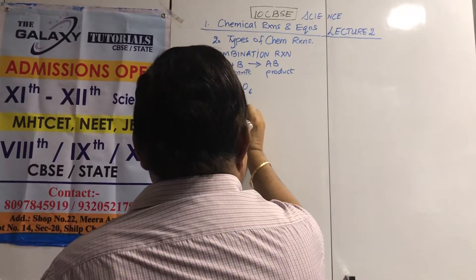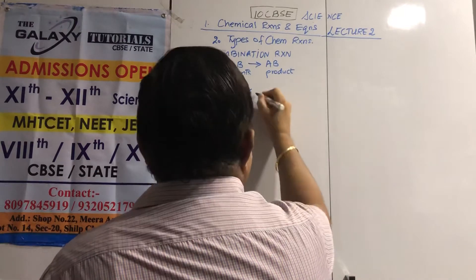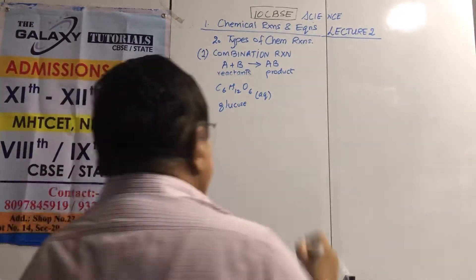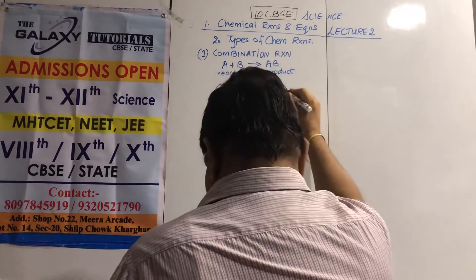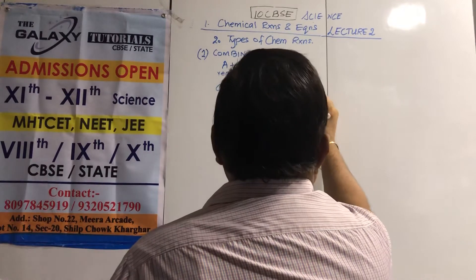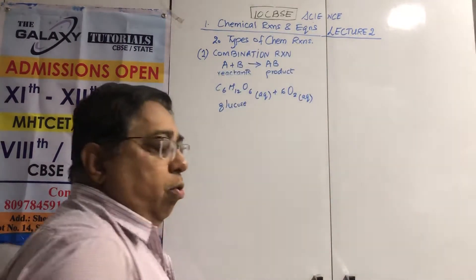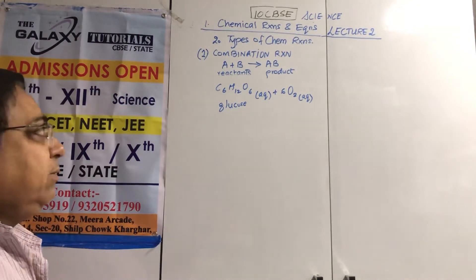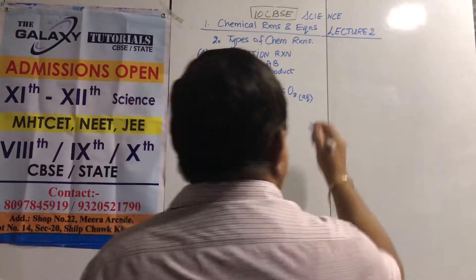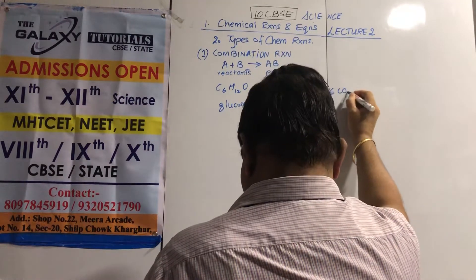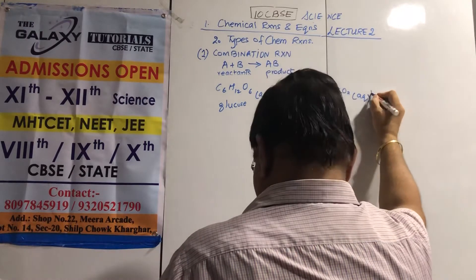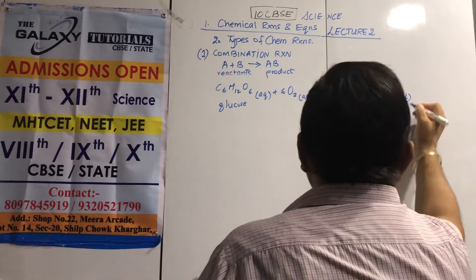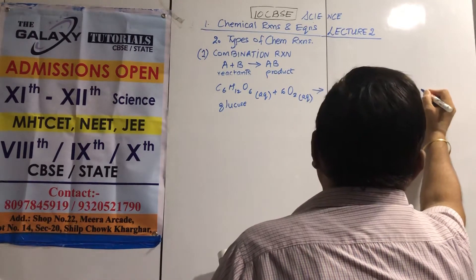Glucose must be dissolved — dry powders don't react; it is in the cytoplasm. The 6O2 is aqueous, as oxygen reaches the cell dissolved via blood through capillaries. This gives you 6CO2 aqueous, still dissolved in plasma, plus 6H2O liquid, the liquid portion of cytoplasm, plus energy.